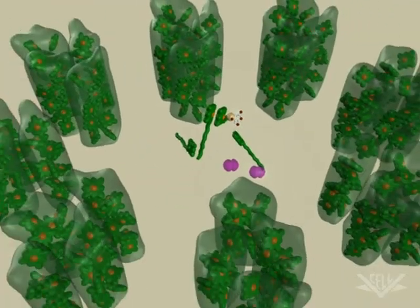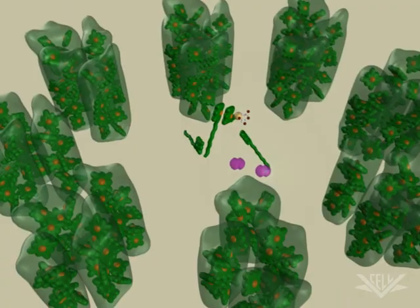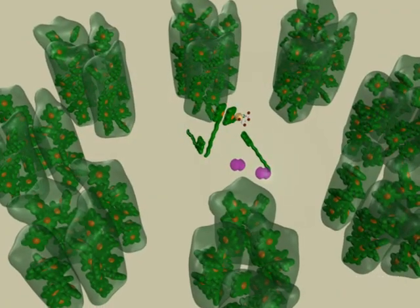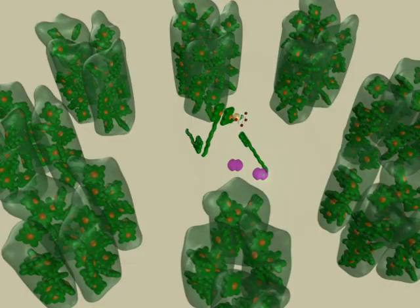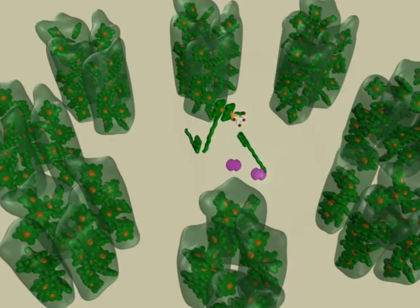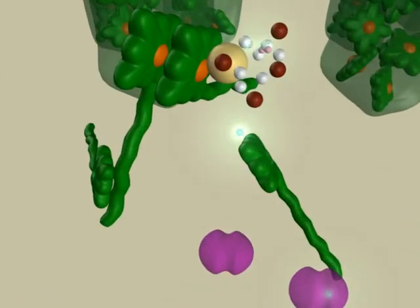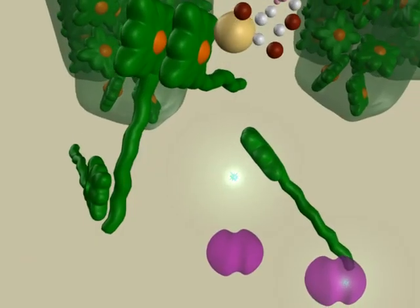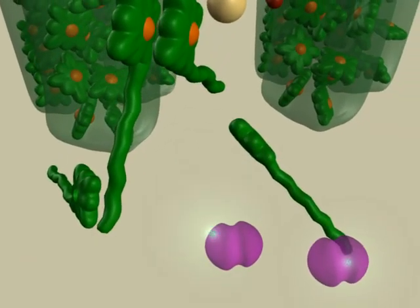Since QB needs two electrons to become mobile, a second photon of light is required. The resonance energy is again transferred to the reaction center. An electron is lost from P680 and transferred via QA to the QB, which already contains one electron.